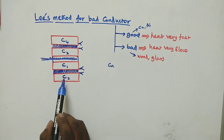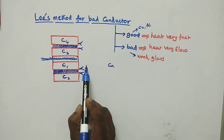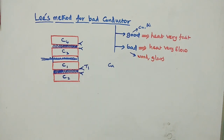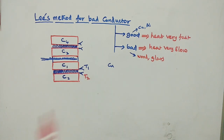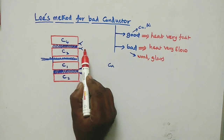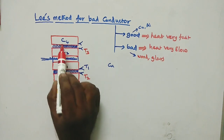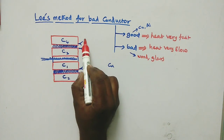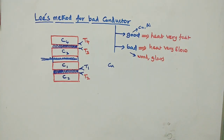Disc C1 is connected to thermocouple T1, disc C2 is connected to thermocouple T2, disc C3 is connected to thermocouple T3, and disc C4 is connected to thermocouple T4.